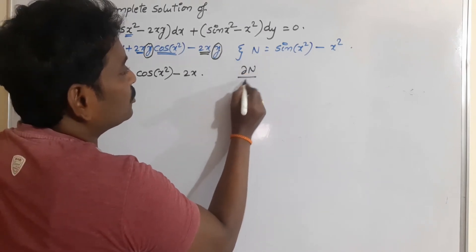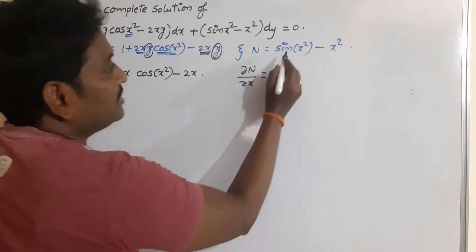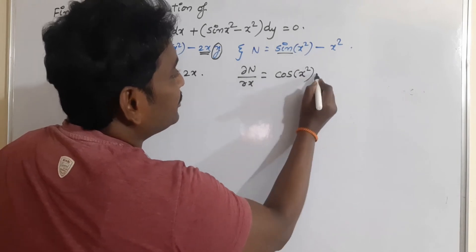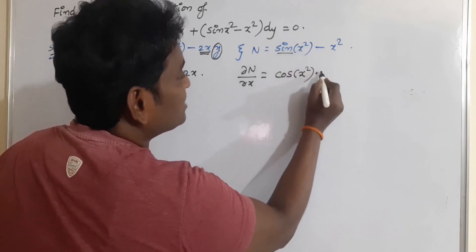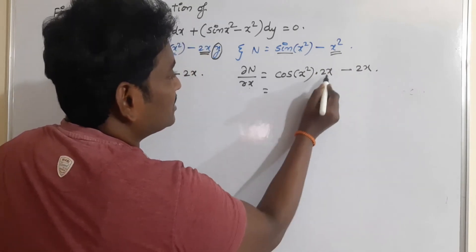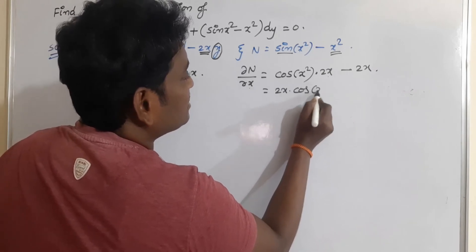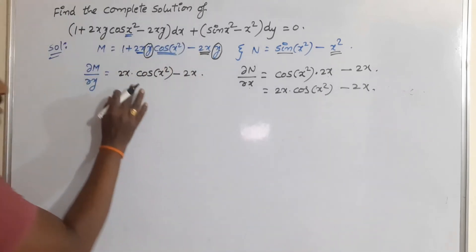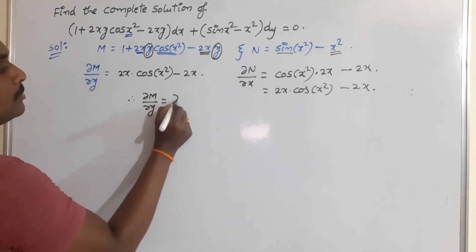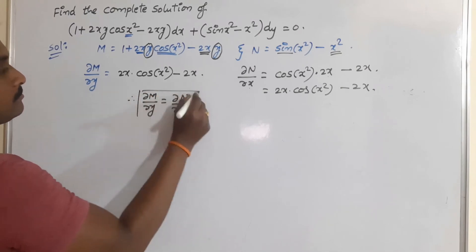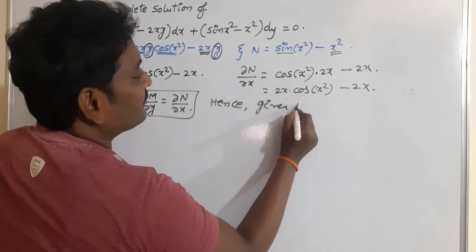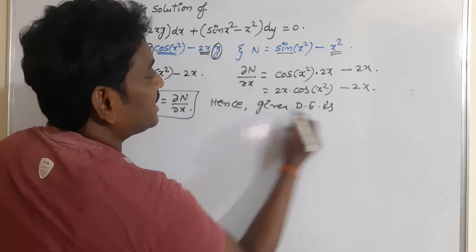Now calculate ∂N/∂x. The derivative of sin is cos, so write the angle as usual into the derivative of x², which is 2x, minus again the derivative of x², which is 2x. So this can be written as 2x·cos(x²) - 2x. Clearly we are observing that both are the same. So ∂M/∂y = ∂N/∂x, hence we conclude that the given differential equation is exact.